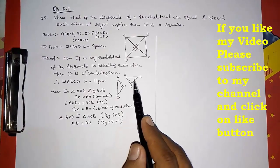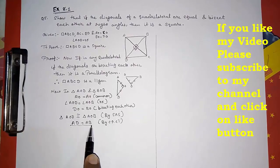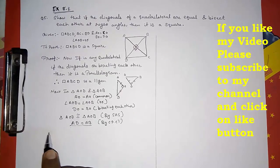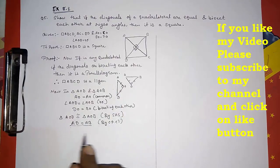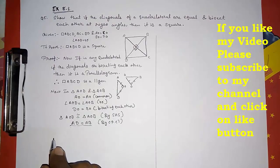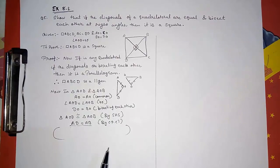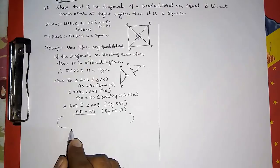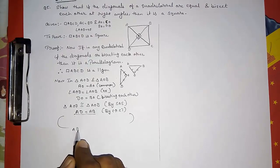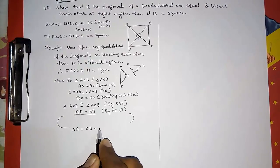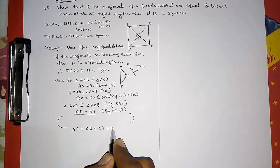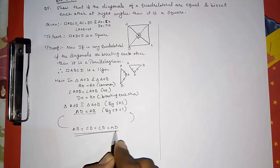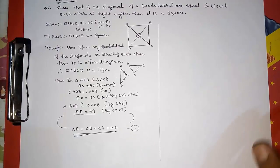So we have got that adjacent sides are also equal. In a parallelogram, if adjacent sides are equal, then all sides are equal. So we can write: AB equals BC equals CD equals AD. Here we have proved that all sides are equal. This is result number one.